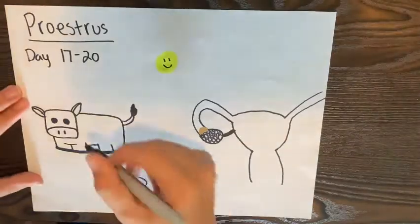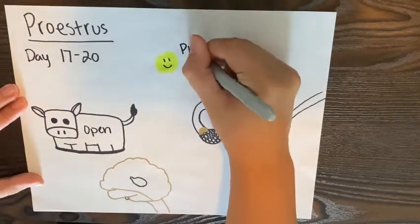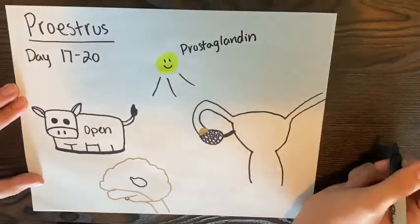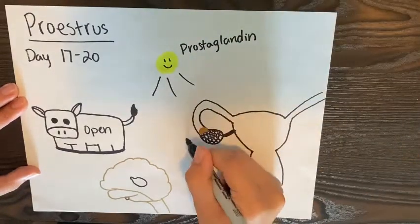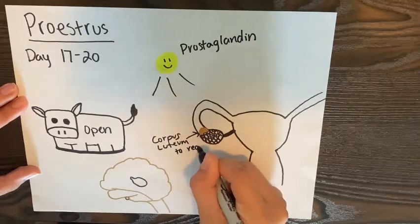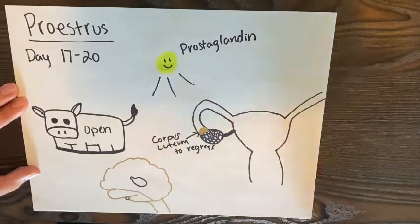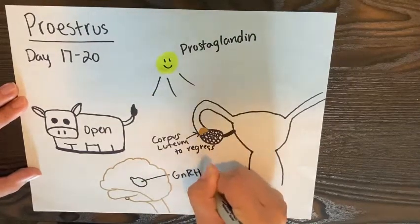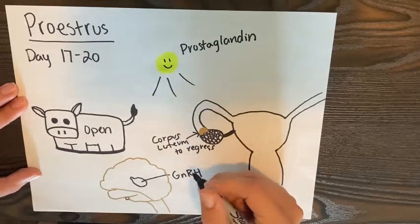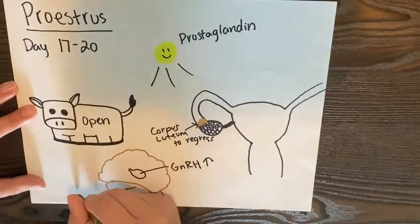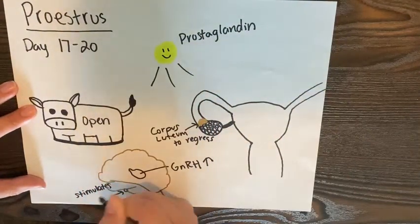Proestrus occurs from day 17 to 18. If a cow isn't pregnant, prostaglandin is released. This causes the corpus luteum to regress, which means progesterone declines. Since progesterone is no longer inhibiting GnRH from the hypothalamus, GnRH begins to rise. This in turn causes the stimulation of LH and FSH from the anterior pituitary gland.